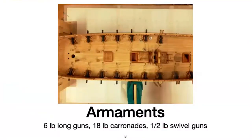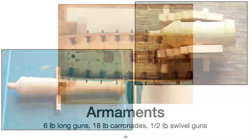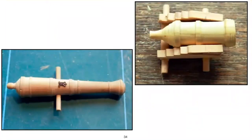Armaments. Pandora carried six-pound long guns, 18-pound carronades, and half-pound swivel guns. For all the gun barrels, I made mold patterns out of wood. Then my DELF casting kit was used to manufacture the actual barrels.